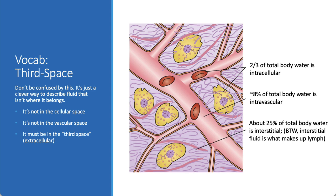Water is a big part of every human being. About two-thirds of the total body water is in our cells, and that's where the water is. About 8% of the water lives intravascularly, and about 25% of the water is in a third space — it's not intracellular, it's not intravascular. It's a third space, and we call that the interstitial space. The cool kids call it third spacing when fluid collects there.